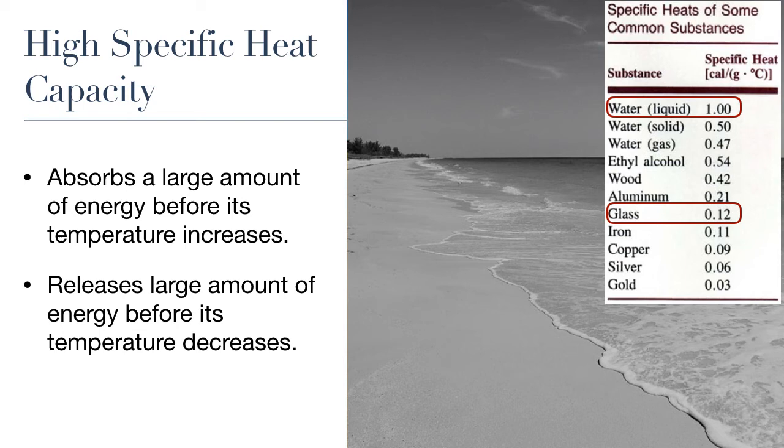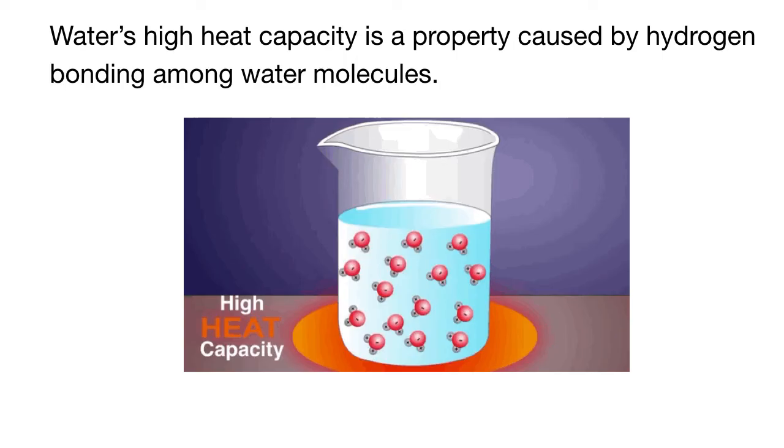So what that means is that in order for the temperature of the water in the lake or ocean to increase, it needs to absorb a lot of energy. And similarly, water will hold onto that energy much longer and will not get colder until large amounts of energy are released. The same is not true of many other materials, especially metals. They get hot super fast because they don't need to absorb that much energy to increase their temperature.